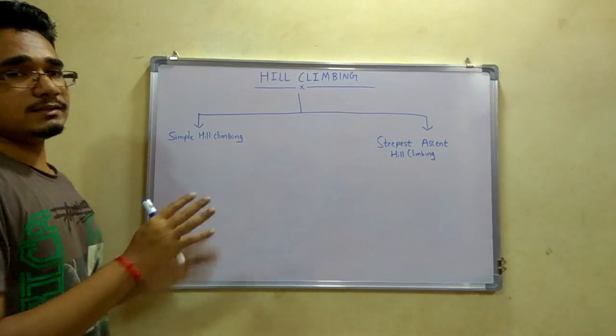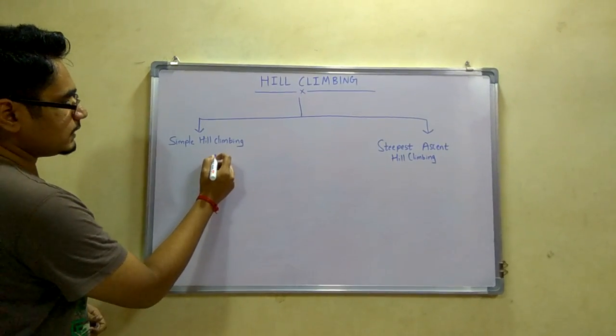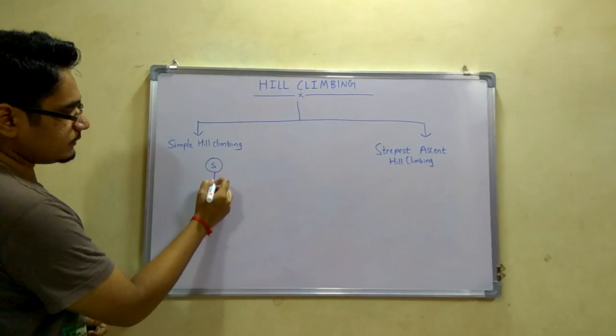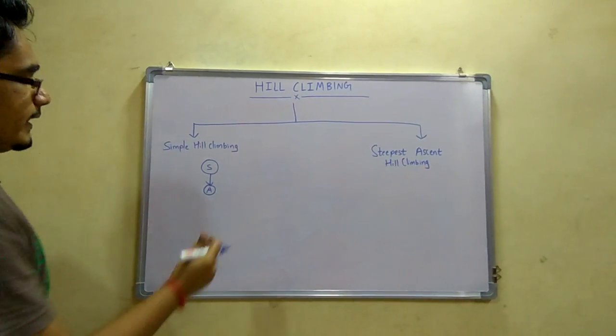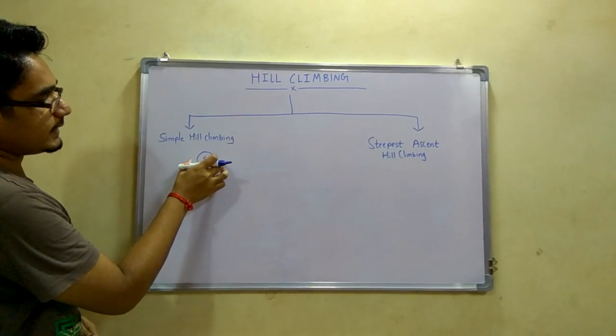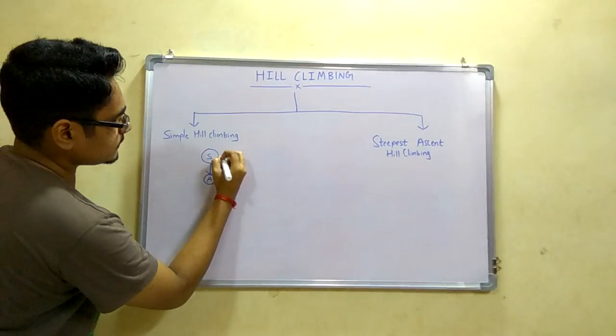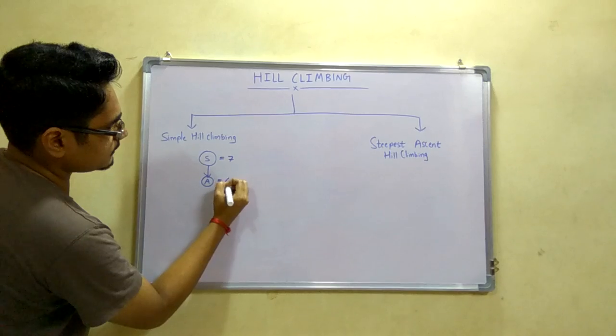Let's see what simple hill climbing is. Suppose there is a state S and if this state produces its successor A, we will check if the value of this successor is heuristically better than the current state or not. For example, the value of this state is 7 and this successor is 6.